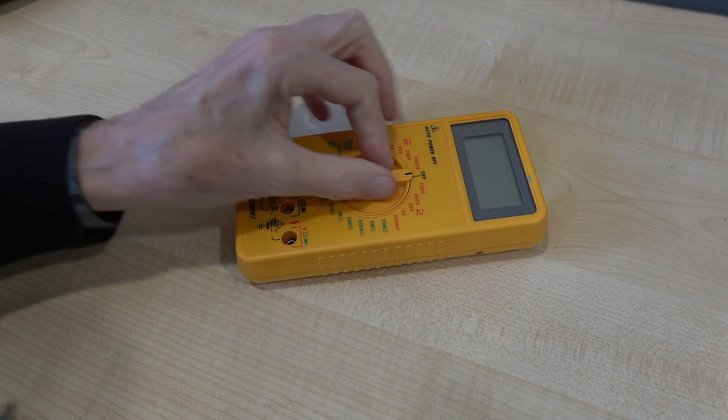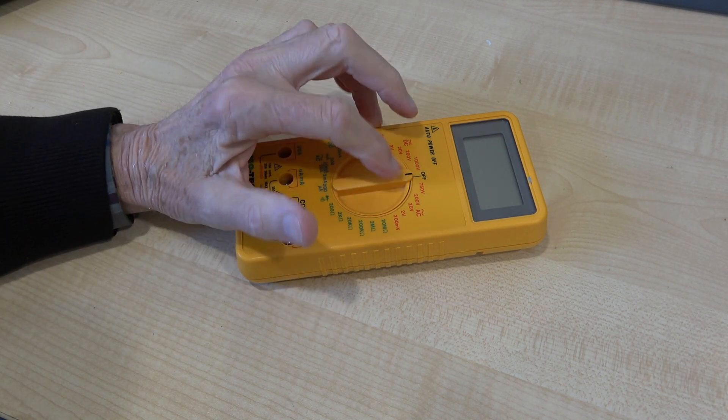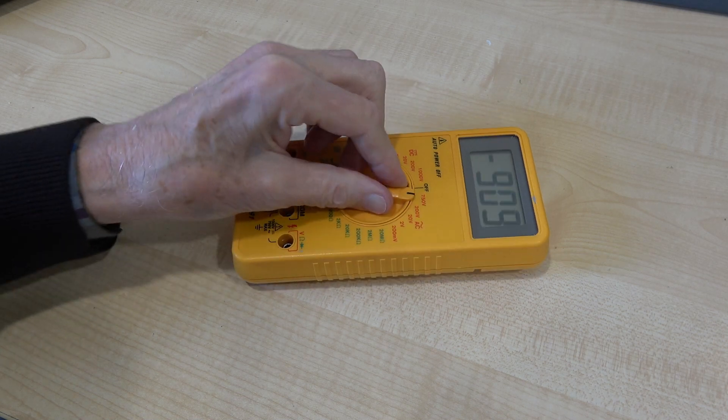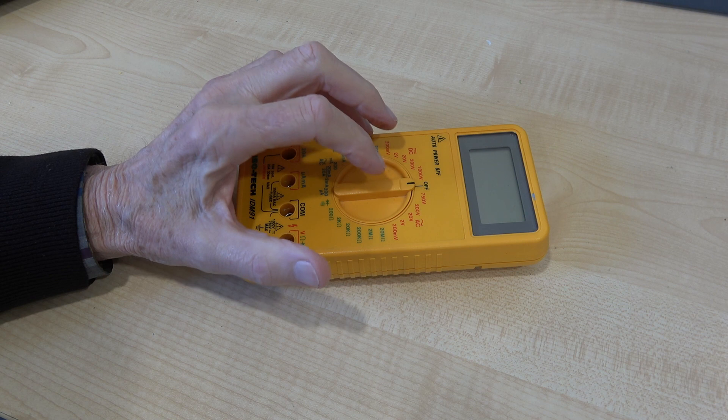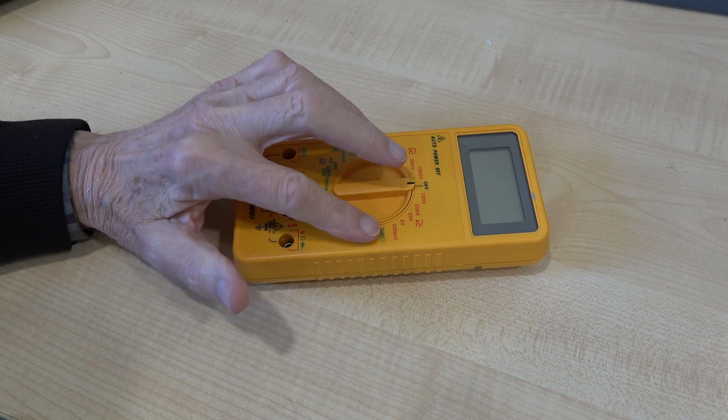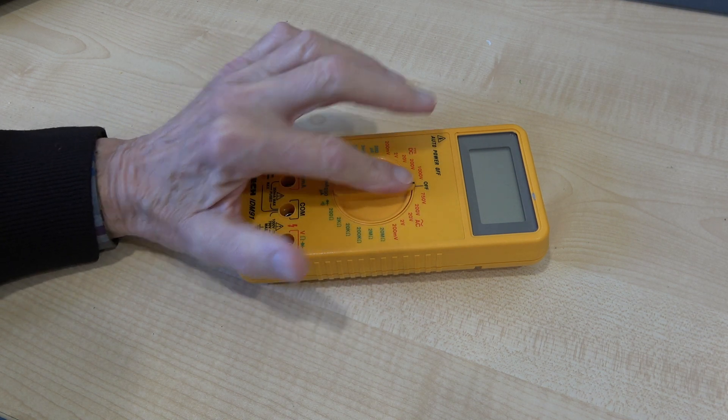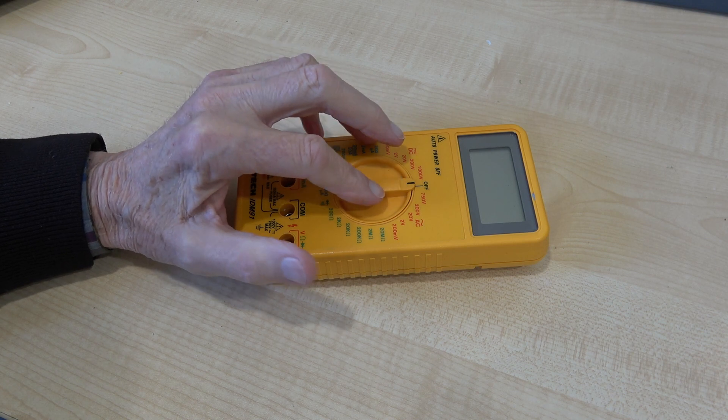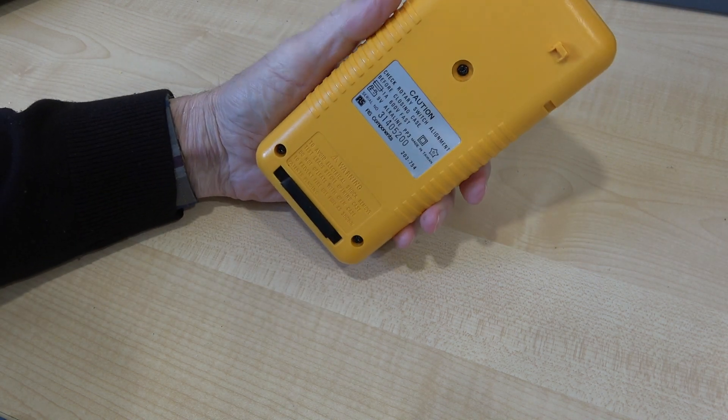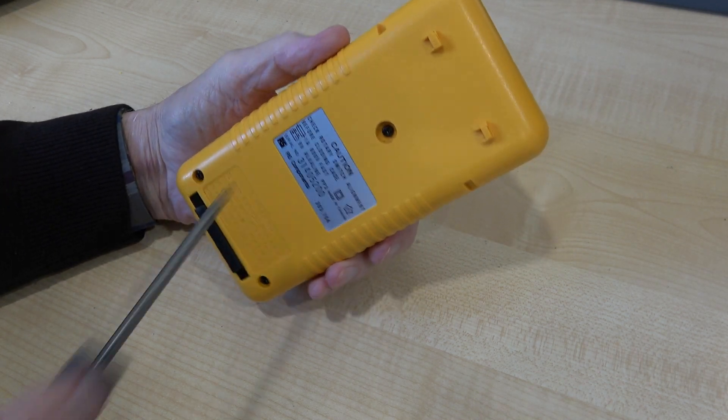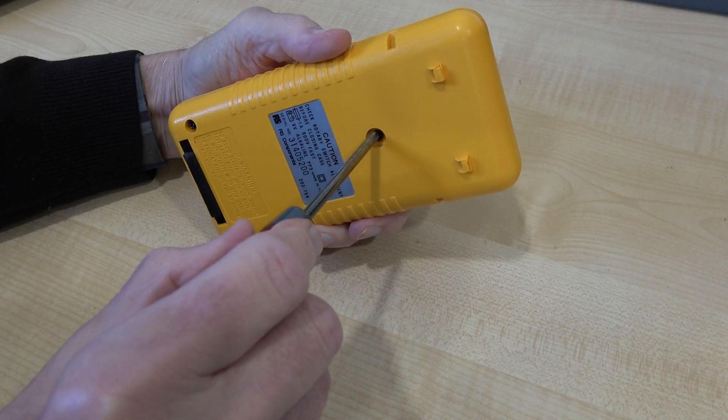To get it apart, you need to make sure, first of all, that the switch is in the OFF position. Not for any other reason. It could be set to anywhere. But you need to know where this lines up in order to get it back together again. So on the back, we have three screws. We'll whip those out.